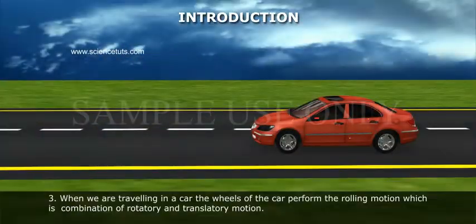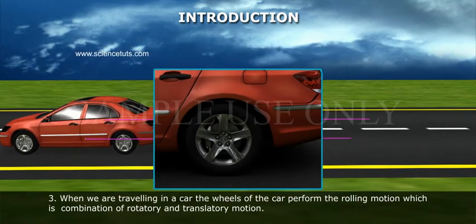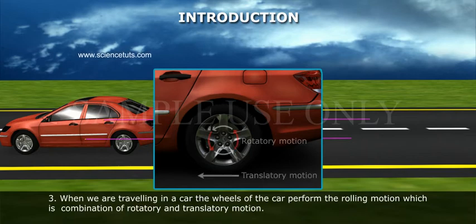When we are travelling in a car, the wheels of the car perform the rolling motion, which is combination of rotatory and translatory motion.